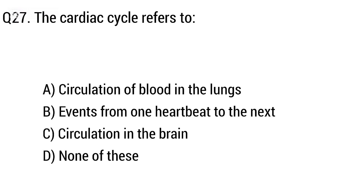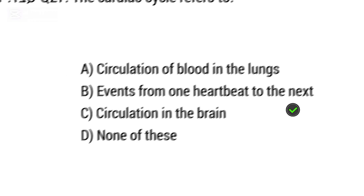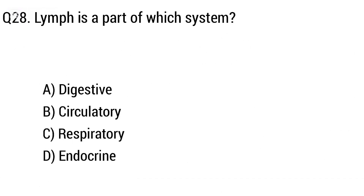Question 27: The cardiac cycle refers to option A: circulation of blood in the lung, B: events from one heartbeat to the next, C: circulation in the brain. The right answer is option B, events from one heartbeat to the next.